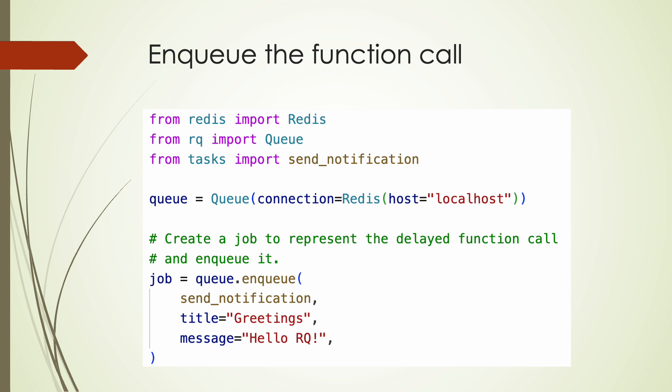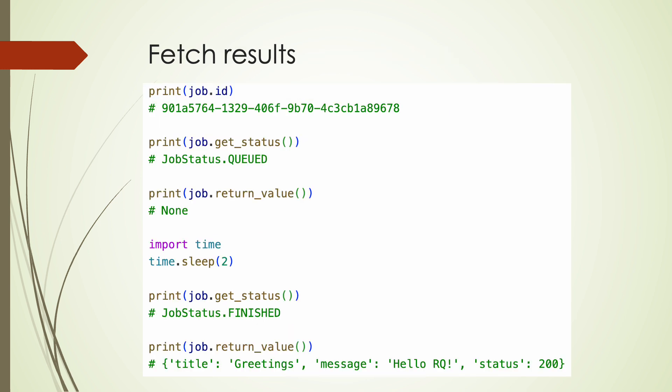There are tons of configurations for enqueuing in the official documentation, which can be used to fine-tune enqueuing function calls. The job instance returned when enqueuing a function call can be used to get the job ID, status, return value, etc.